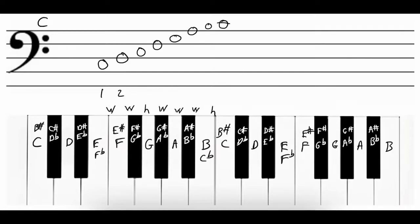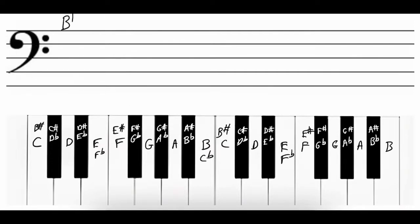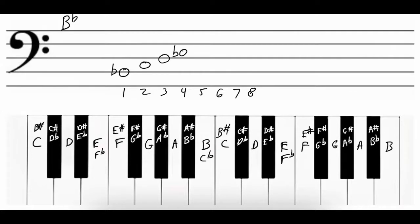Let's remember that and try this with another scale. We'll look at one of the easiest for trombone players, the B-flat major scale. Since there are eight notes, let's write in the numbers one through eight. The notes of the B-flat major scale: the first note is B-flat, the second note is C, the third note is D, the fourth note is E-flat, the fifth note is F, the sixth note is G, the seventh note is A, and the last note is B-flat.